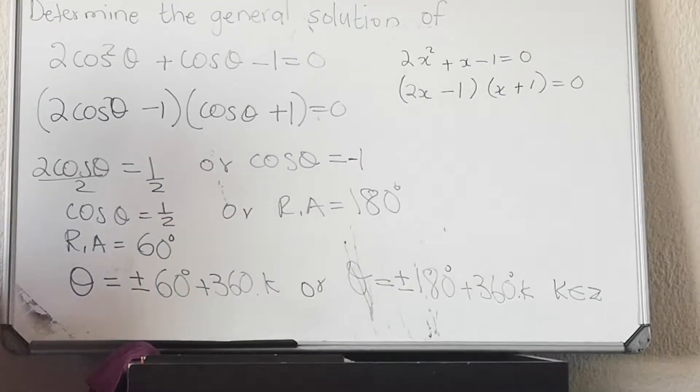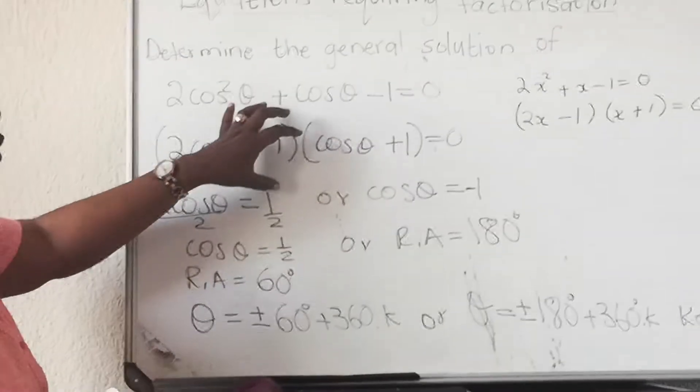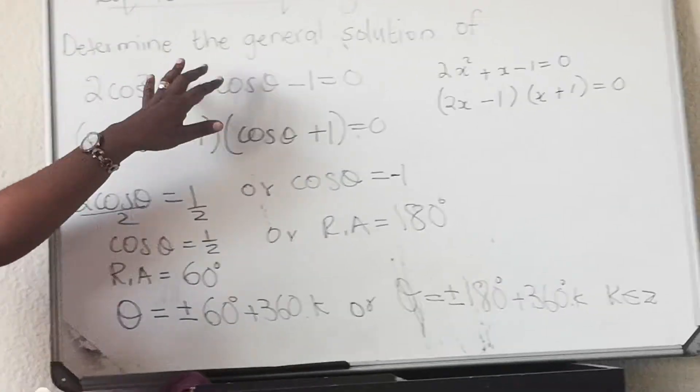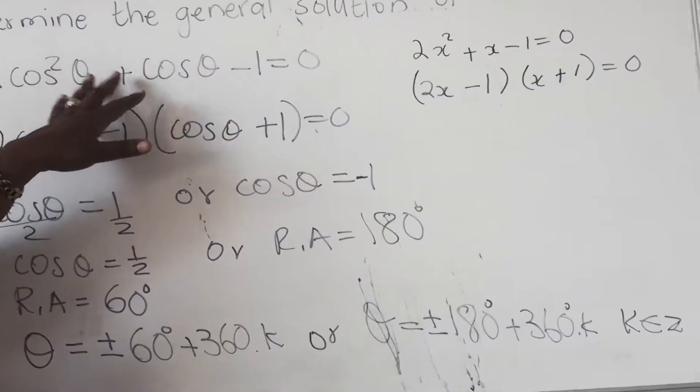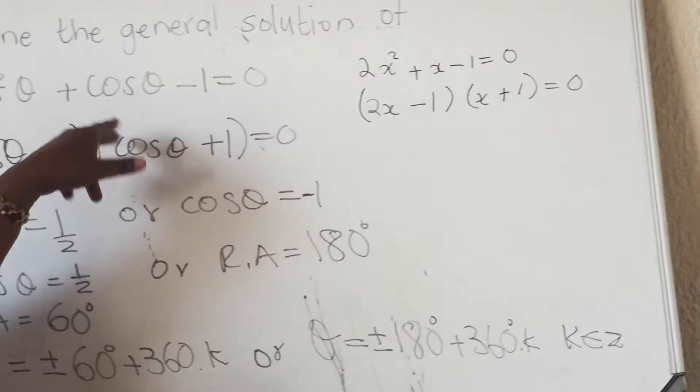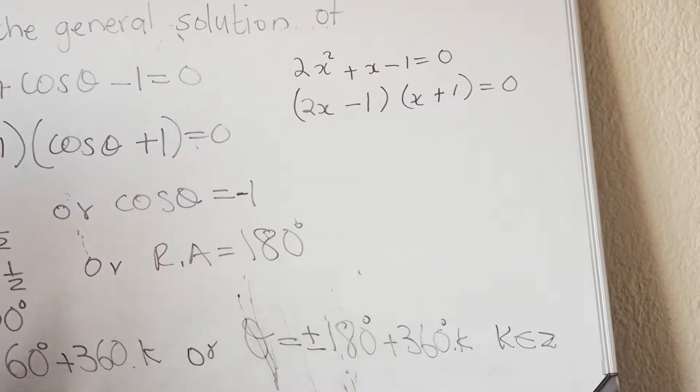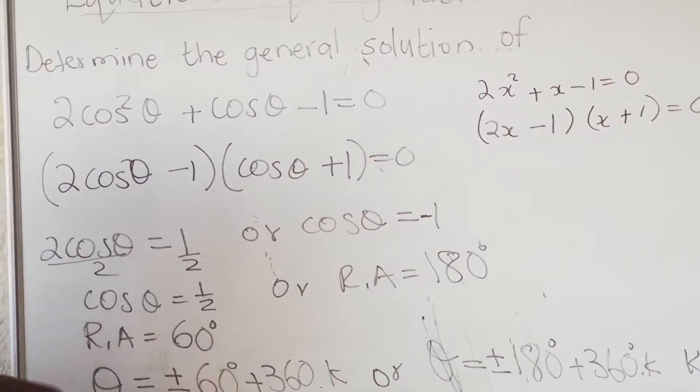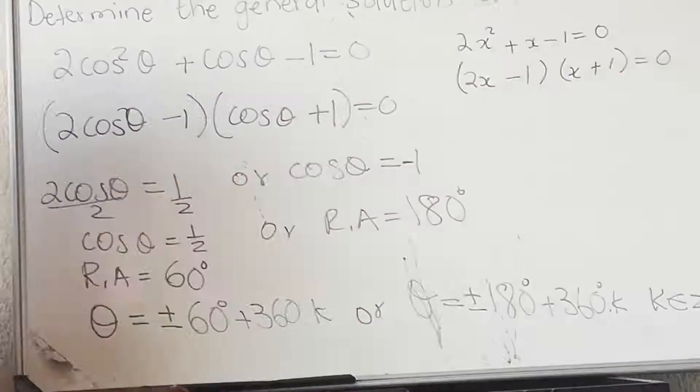Then we have done your general solution. The important thing here is to factorize correctly. So if the cos, or maybe the sine or the tan are confusing you, go to the side, replace them, factorize, come back and finish your solution. This is the end of the video. Thank you for watching.